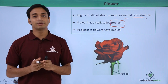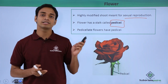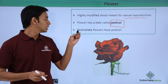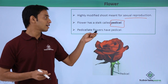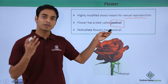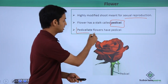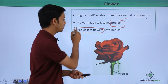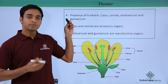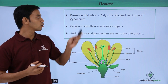Because of pollination, the pedicel helps in the process of sexual reproduction, so it plays an important function in sexual reproduction. Flowers which have a pedicel are known as pedicellate flowers. A typical flower has four whorls or four different structures: calyx, corolla, androecium, and gynoecium.